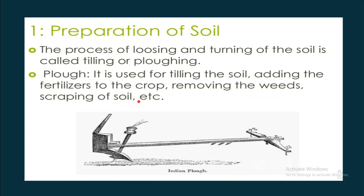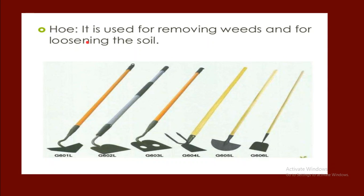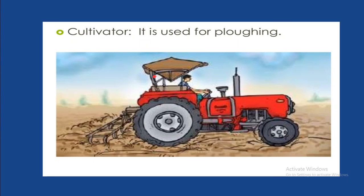The first practice is preparation of soil, also called tilling or plowing. A plow is used for tilling the soil, adding fertilizer to the crop, removing weeds, and scrapping up the soil. Another method is the hoe, used for removing weeds and loosening the soil. A cultivator attached to a tractor is also used for plowing and cultivation purposes.